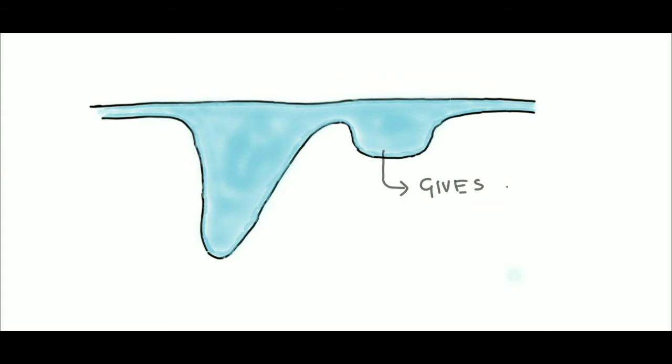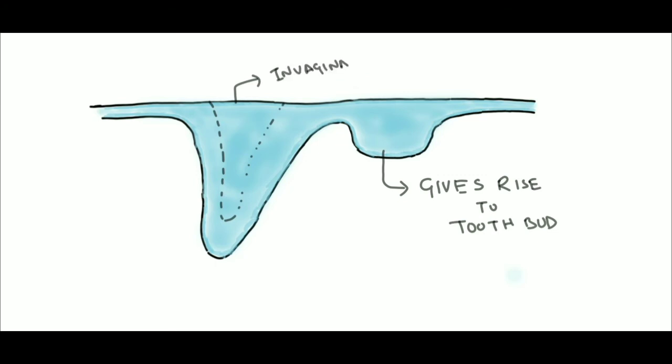The primary dental lamina gives rise to the tooth bud, whereas the vestibular lamina invaginates and gives rise to the vestibule, a space present between the tooth and the cheeks.